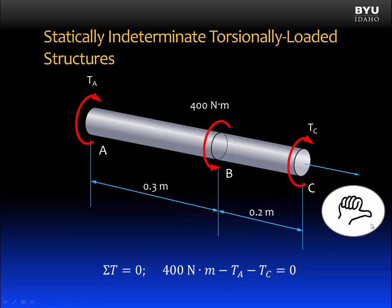Using the right-hand rule as shown, the 400 newton meter torque will be positive. The reactions at wall A and at C will be negative. All of that sums to zero. We see there are two unknown reactions and we have no more equations of static equilibrium. Therefore, it is statically indeterminate.